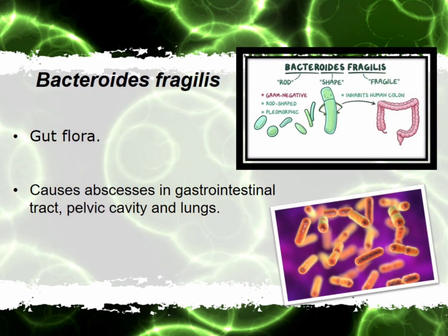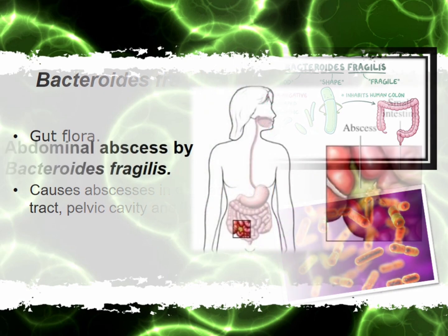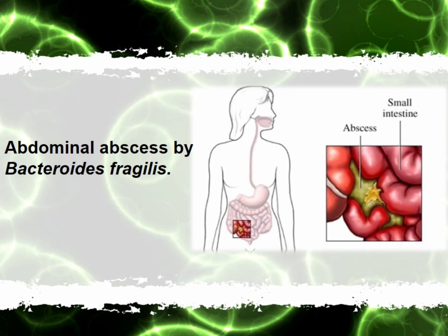This one is Bacteroides fragilis. This species is rod-shaped, like our capsule medicines. The home of this one is inside our small intestine. Bacteroides fragilis can cause infections which can result in abscesses inside the gastrointestinal tract, abdomen, and lungs too. You can see the yellow part on the small intestine in the picture — that yellow part is the abscess caused by Bacteroides fragilis, and it is really very painful.